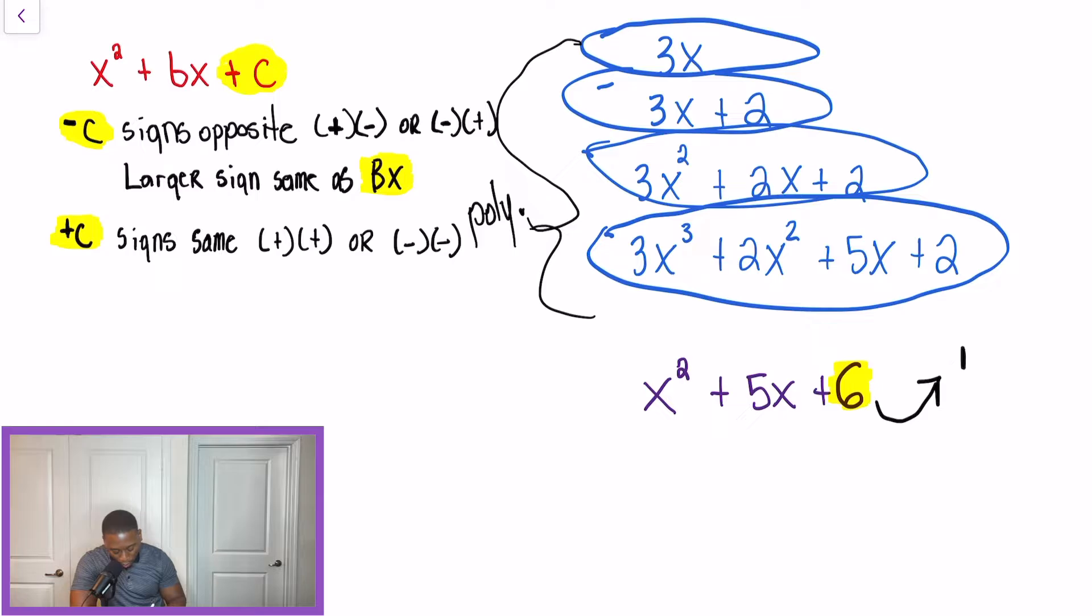So, to start this problem out, we're going to write the factors. So, that's the numbers that multiply to give us 6. We have 1 times 6, 2 times 3. And our goal, after we write out the factors, we want to pick the two factors that when we combine them by adding or subtracting them, they will give us that middle term. So, they're going to add to give us 5.